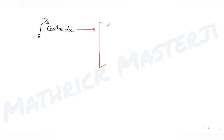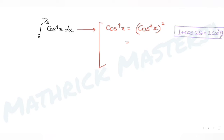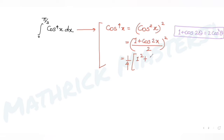I can write cos⁴(x) as (cos²x)². Using the double angle formula 1 + cos(2θ) = 2cos²θ, we get cos²(x) = (1 + cos2x)/2. So cos⁴(x) = ((1 + cos2x)/2)². Expanding using (a+b)² = a² + 2ab + b², we get (1/4)(1 + 2cos2x + cos²2x).